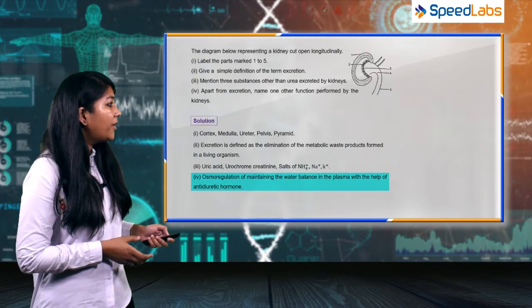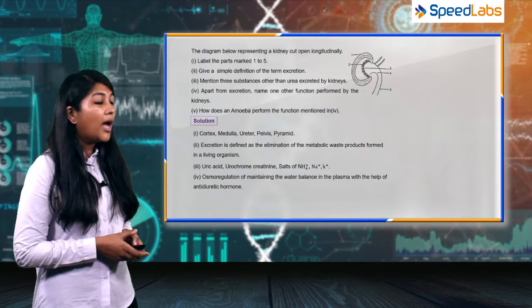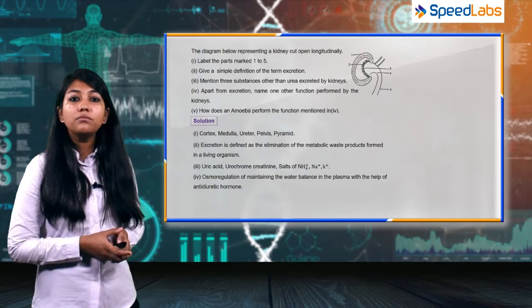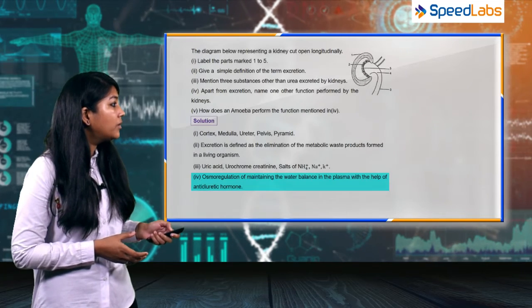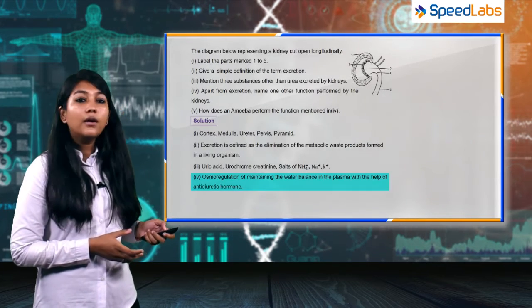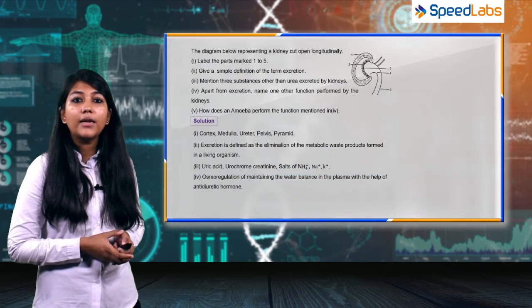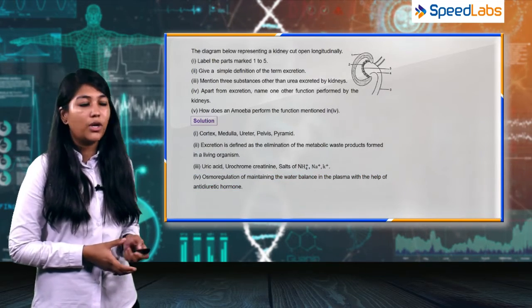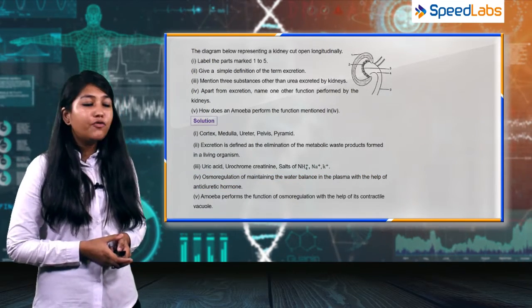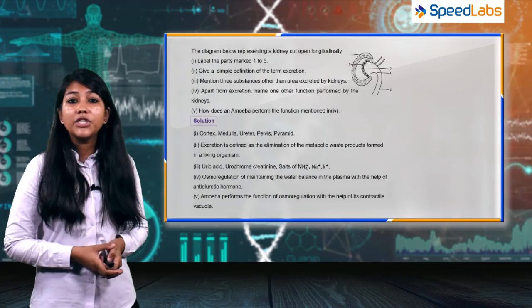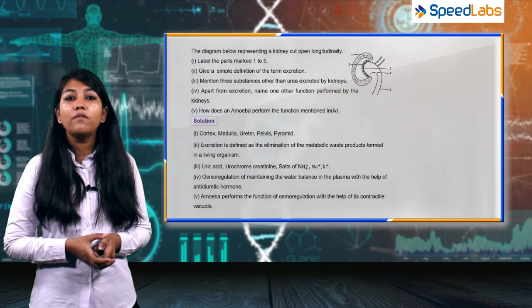Moving on to the next part of the question: how does an amoeba perform the function mentioned in fourth? In fourth we were basically talking about osmoregulation. So now this question is asking how does amoeba perform osmoregulation. Amoeba performs the function of osmoregulation with the help of a contractile vacuole.